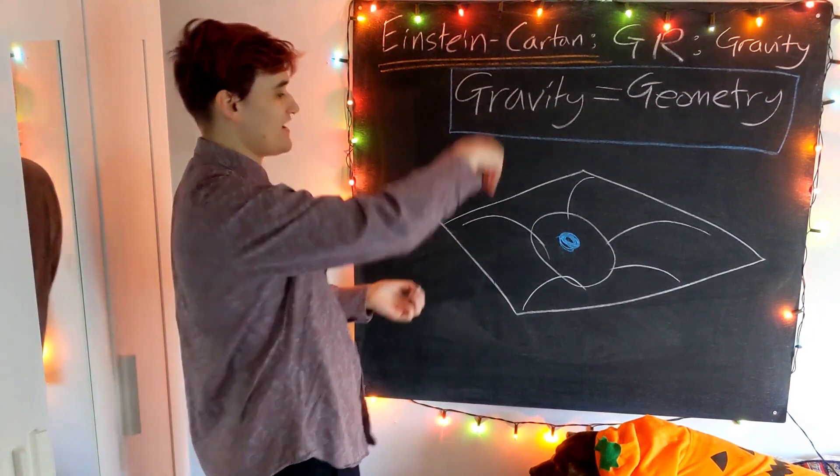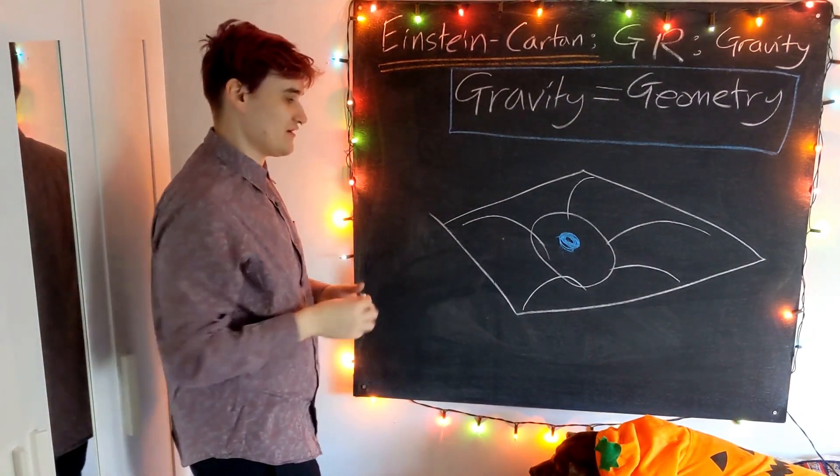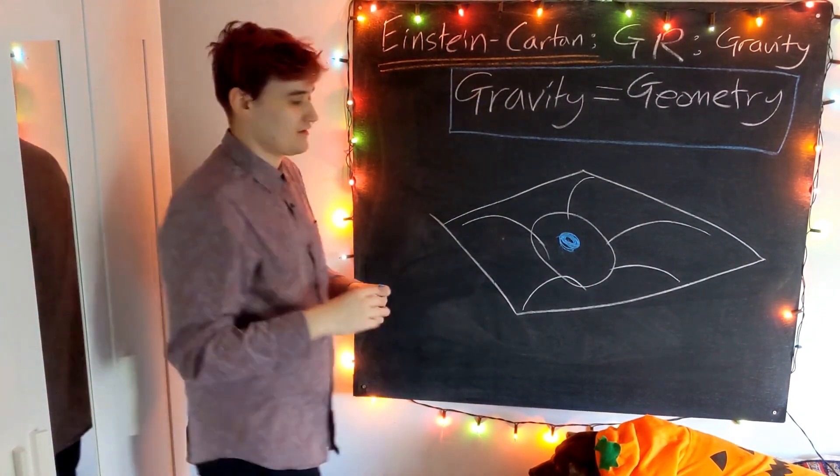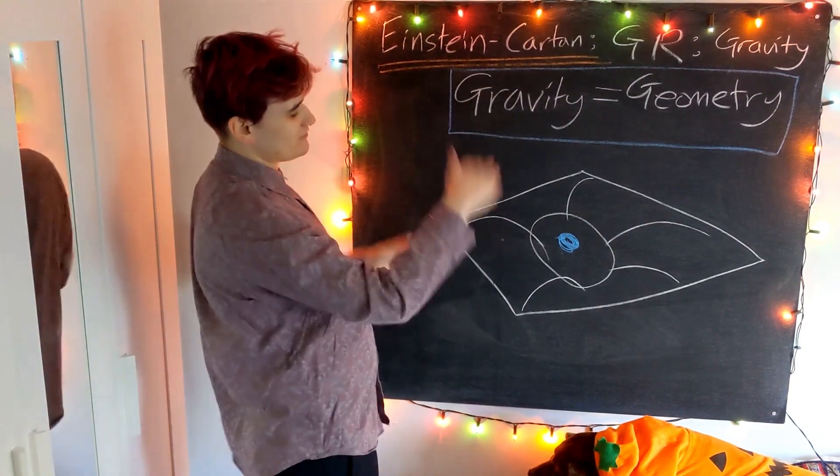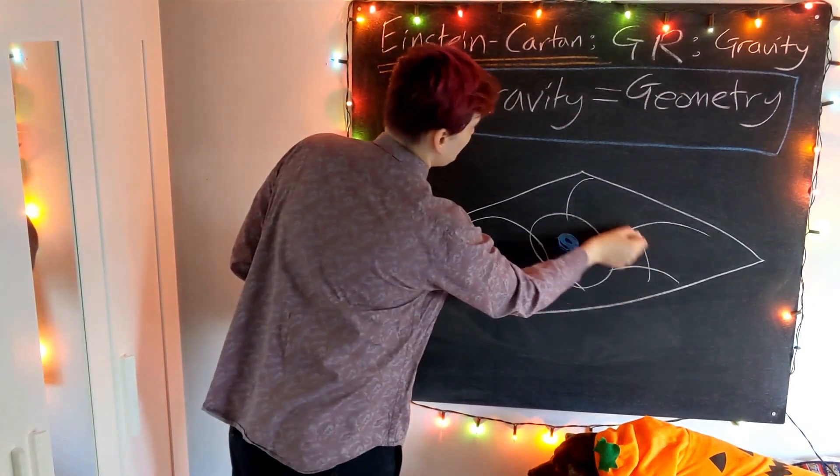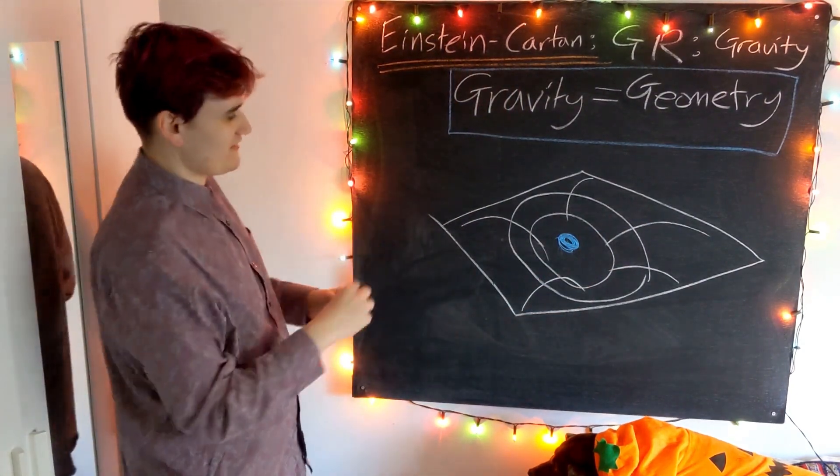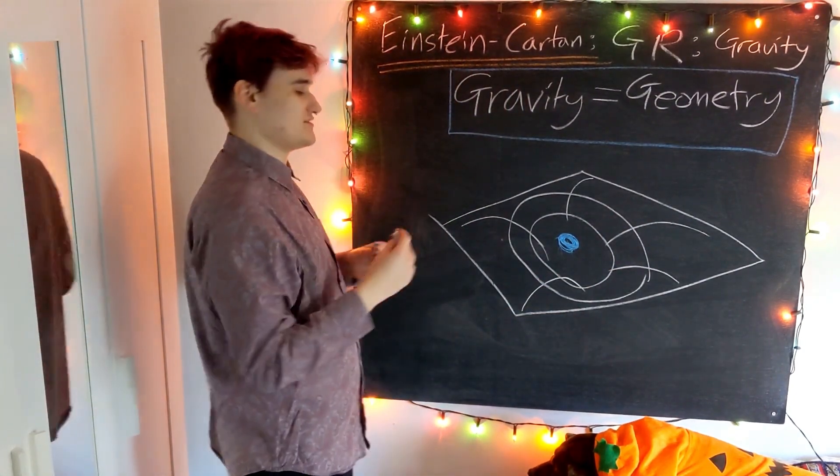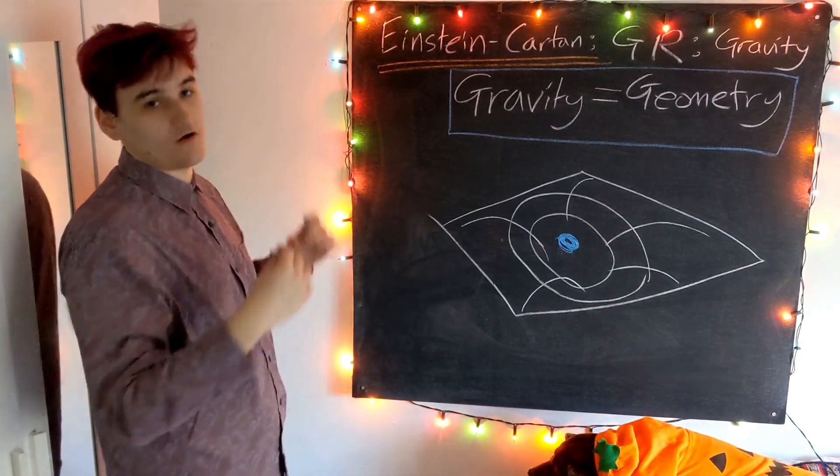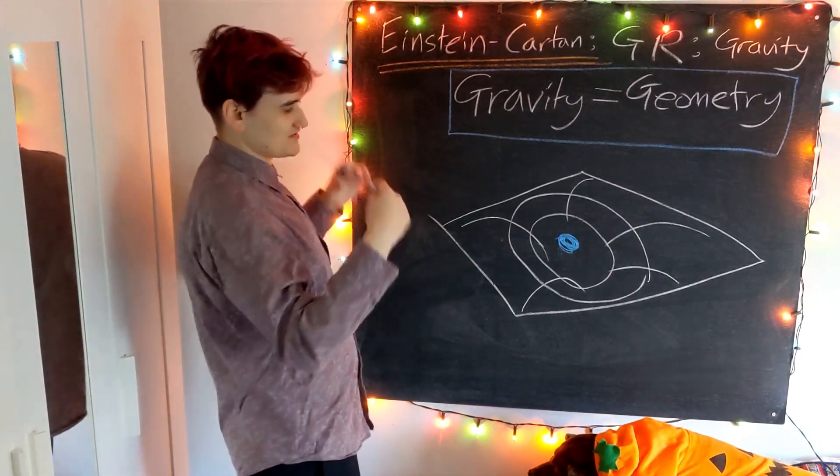Essentially you should view this: flat spacetime, we add matter to it or energy rather, and it causes this flat rubber sheet to kind of sink down. We have this well that starts to appear, and this is how we visualize the gravitational effect on the spacetime—it just causes a curvature.